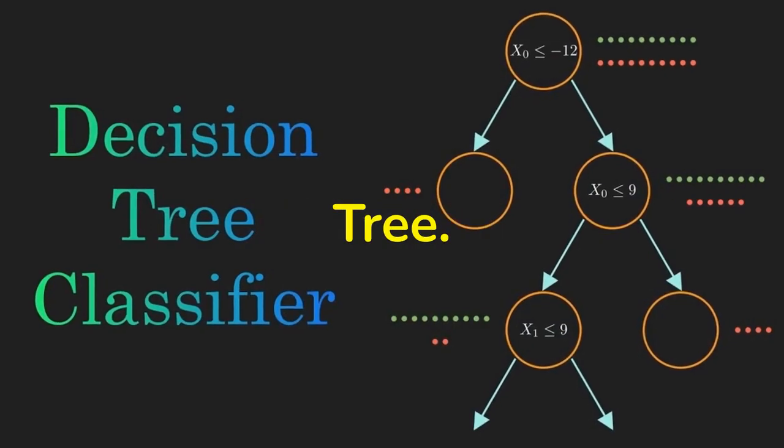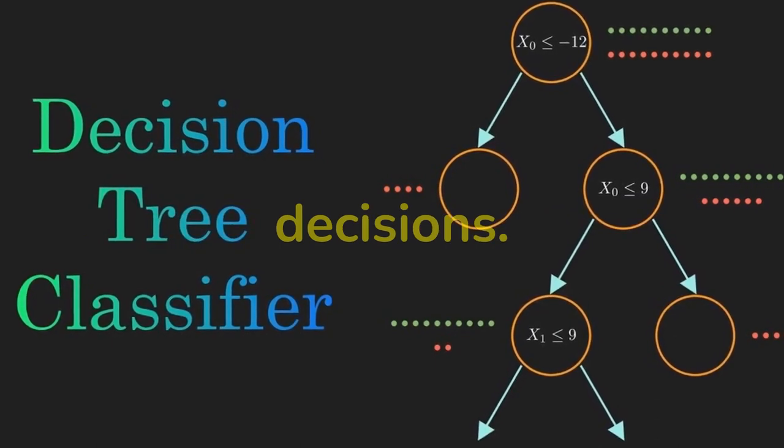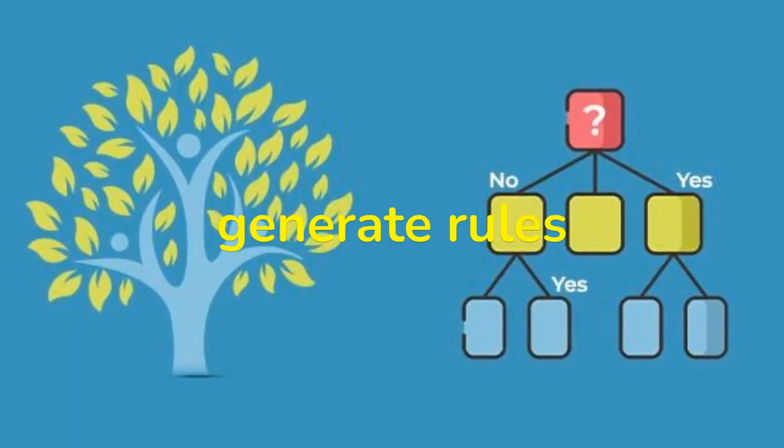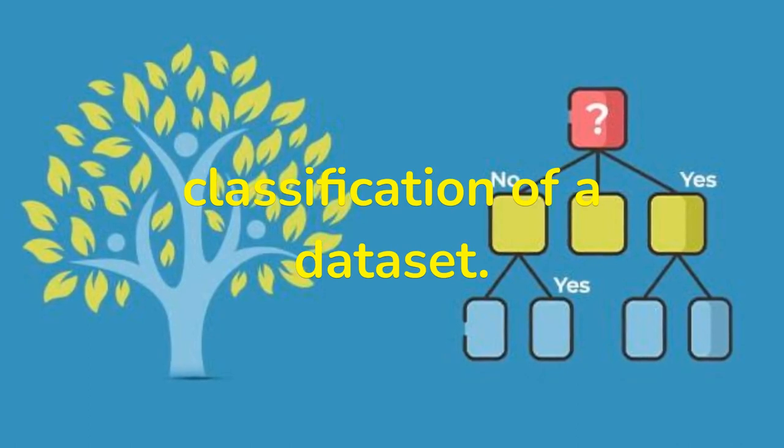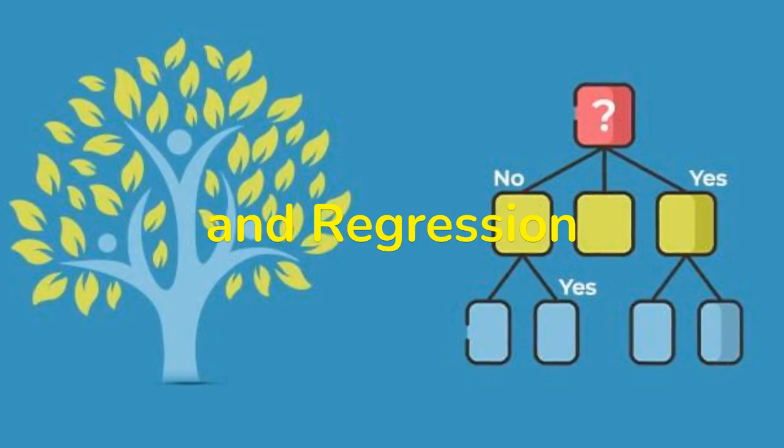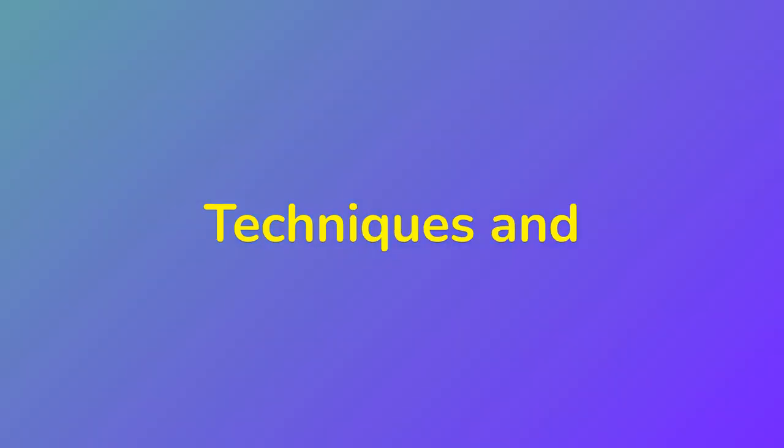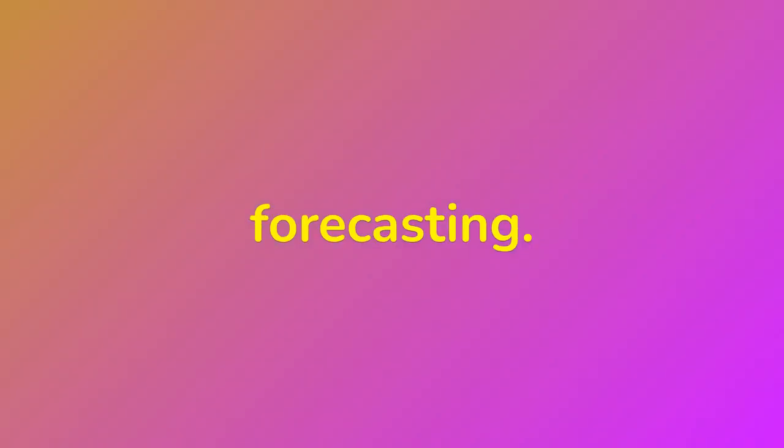Decision tree. Tree-shaped structures that represent sets and decisions. These decisions generate rules for the classification of a data set. Specific decision tree methods include classification and regression trees (CART) and ID3. So these are some techniques and algorithms used in weather forecasting.